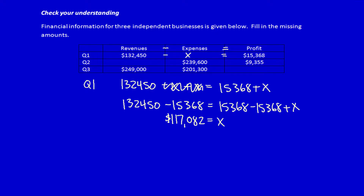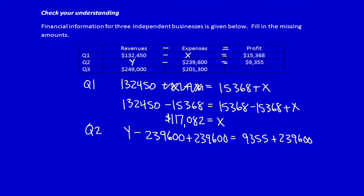This is just a matter of manipulating the equation. Let's solve for y. That eliminates the 239,600 from the left-hand side. y is therefore equal to 248,955.